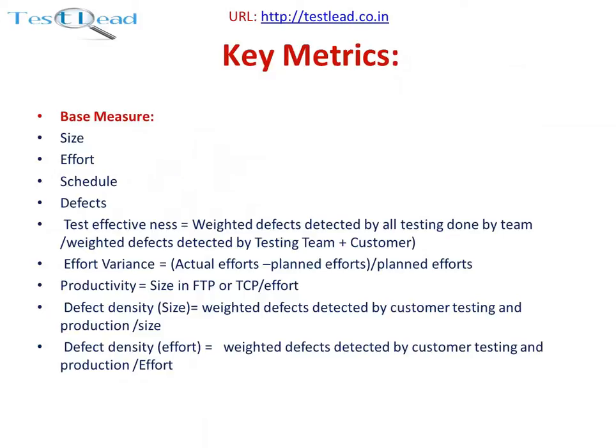Effort variance equals actual efforts minus planned efforts, divided by planned efforts. For example, when testing starts, the effort calculated before testing begins is the planned effort. The actual effort is the effort taken by the team to test the product or application. The effort variance is then calculated as actual efforts minus planned efforts, divided by planned efforts.